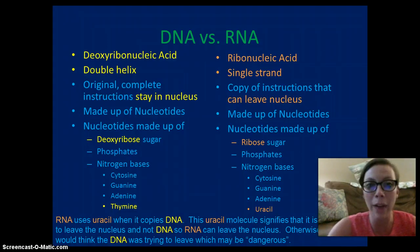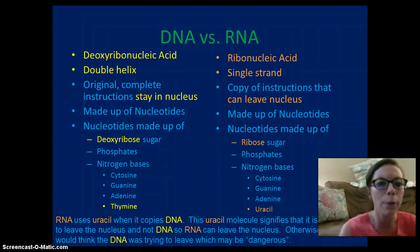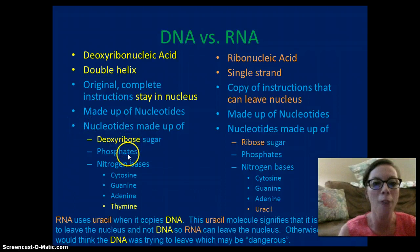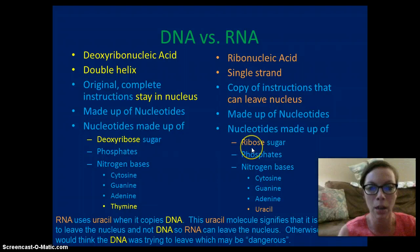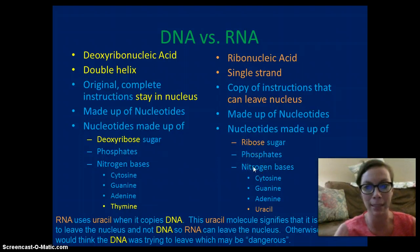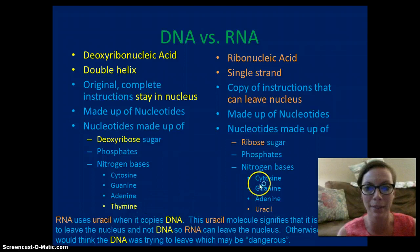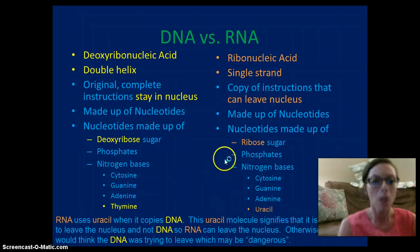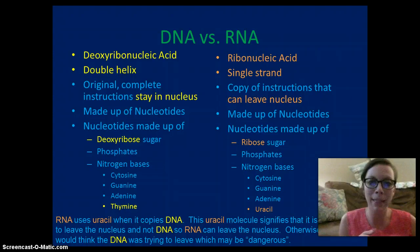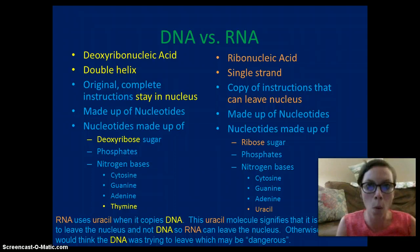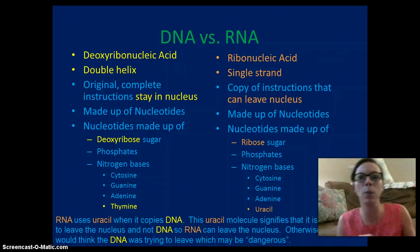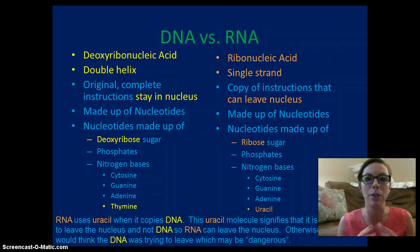Both DNA and RNA are made up of nucleotides. For DNA, the nucleotide components are deoxyribose sugar, phosphate, and four nitrogen bases: cytosine, guanine, adenine, and thymine. For RNA, the components are ribose sugar, phosphate, and four nitrogen bases as well — but the difference is that uracil replaces thymine. So RNA has cytosine, guanine, adenine, and uracil. The RNA uses uracil when it copies the DNA, and the uracil signals the nucleus that the RNA is leaving with the DNA's instructions.